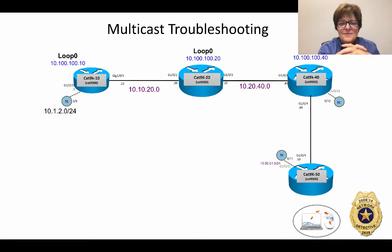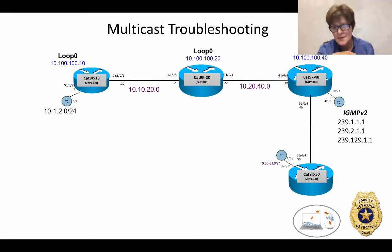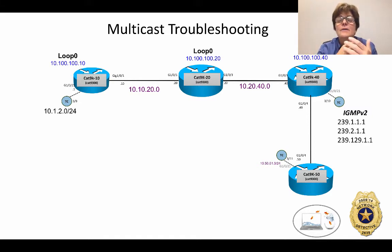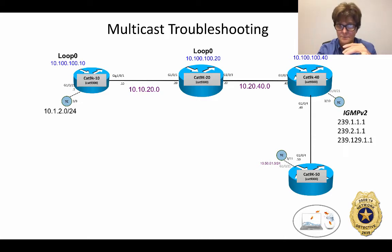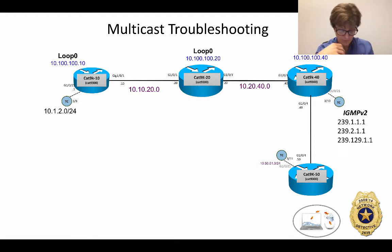Welcome to a little bit of labret fun. We're going to put our network detective badge on and do a little bit of troubleshooting — this is multicast troubleshooting. Off of CAT 9K 40, we have a Spirent Test Center port sending IGMP version 2 join requests for 239.1.1.1, 239.2.1.1, and 239.129.1.1. That's fact number one.